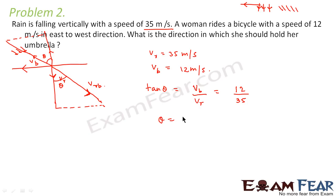So theta is equal to tan inverse of 12 by 35, which comes out to be 19 degrees. Therefore we say that the woman will hold the bicycle at an angle of 19 degrees with the vertical towards west. So 19 degrees with the vertical towards west. This is the angle or this is the direction in which she will hold the umbrella.